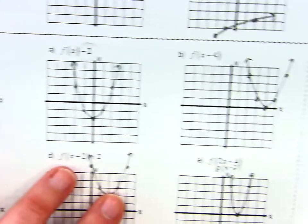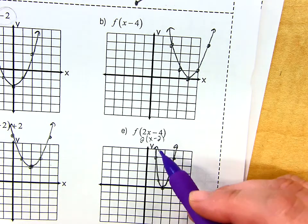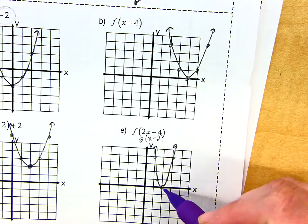And then E we already talked about. We're going to factor out that 2. So now I am going to multiply all the y values by 2, but I'm also going to move it to the right 1. So now I have all those parts.